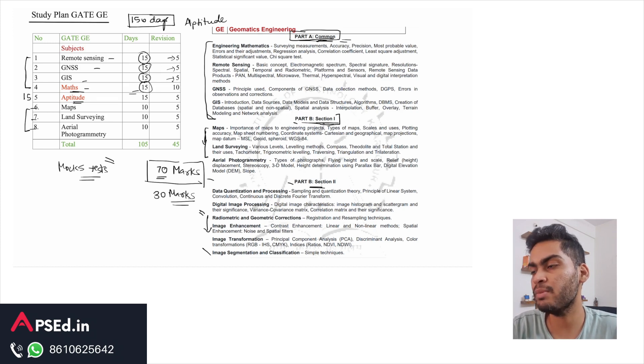Similarly for the remaining topics. Now how you should proceed with studying and revision: you can study a topic, let's say you are starting with remote sensing, then you can study remote sensing, then move on to GNSS. Once you are done with these two topics, you can go back to revise the remote sensing topic in between before you move to the next topic.